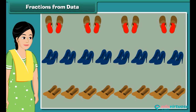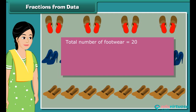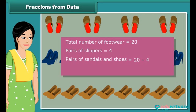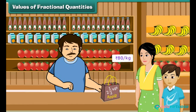Consider another example. Rishabh's mother owns twenty pairs of footwear. Out of these twenty pairs, four pairs are slippers and the rest are sandals and shoes. What is the fraction of sandals and shoes owned by Rishabh's mother? Total number of footwear is equal to twenty. Pairs of slippers are four. Pairs of sandals and shoes are twenty minus four, which is sixteen. Fraction of sandals and shoes is sixteen by twenty, which equals four by five.